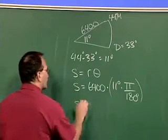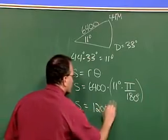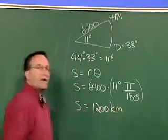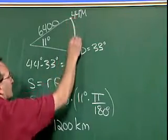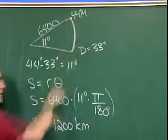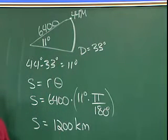you find that S is equal to 1,200 kilometers. So the length of the arc from Madison to Dallas along the face of the earth is equal to 1,200 kilometers.